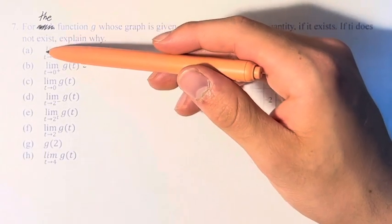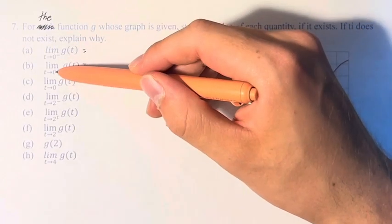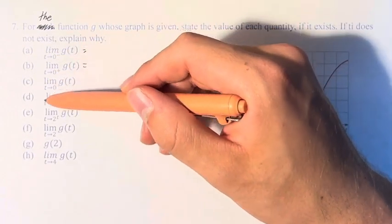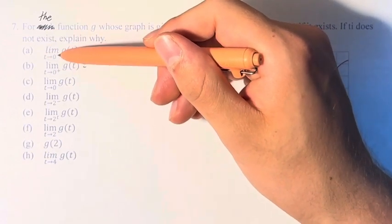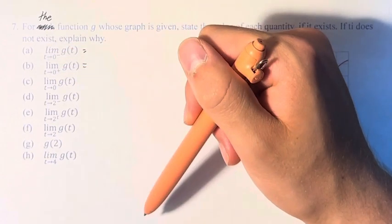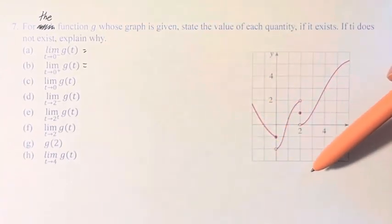So first, we have the limit as t approaches 0 from the left of g(t). We also have it from the right, and we just have the limit as t approaches 0. So the left and the right, which is denoted by the minus sign and the plus sign, are just the direction in which the function is going as it approaches this value of 0.